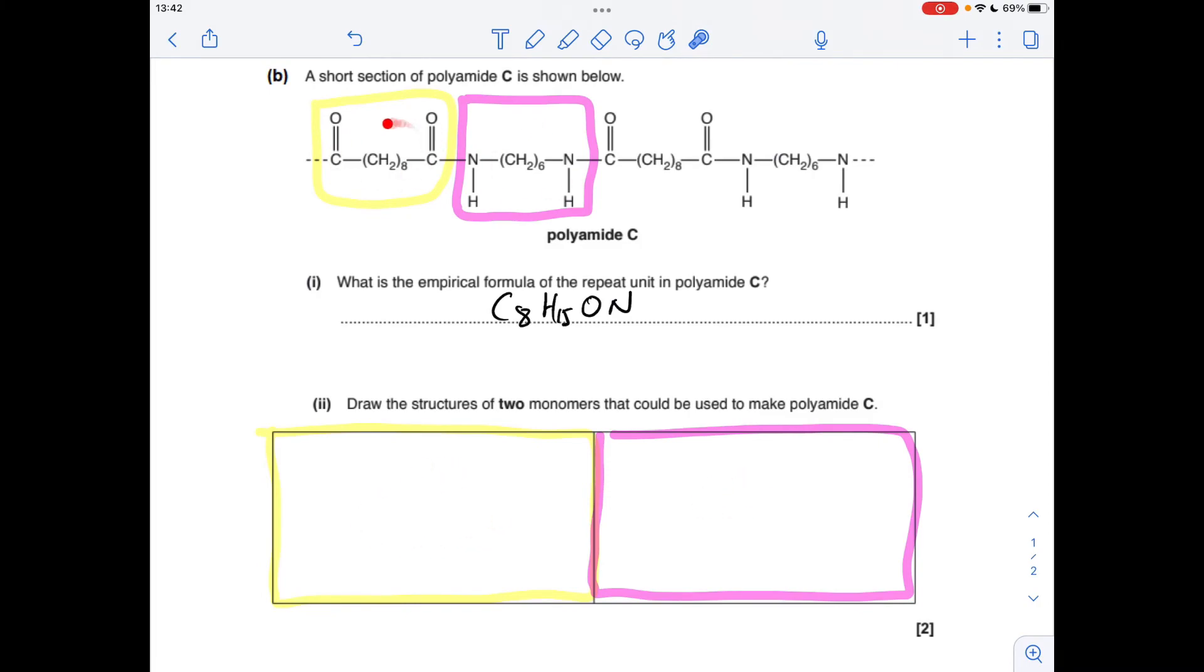So this yellow bit here, what could we use to make that? Well, you could use a di-carboxylic acid. You could even use a diacyl chloride. I'm going to go for the di-carboxylic acid. And for the pink one, we would use a diamine.